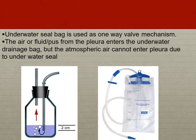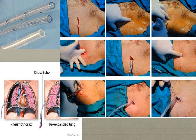An underwater seal bag is used as a one-way valve mechanism — air or fluid from the pleural space passes into the drainage bag, but atmospheric air cannot re-enter the pleural space due to the underwater seal. The pictures show how to do tube thoracostomy, which will be more elaborately taught in the surgical lectures.